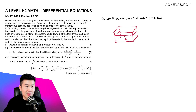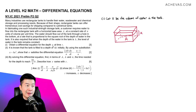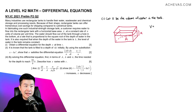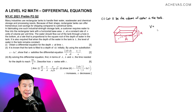The water in the tank has a depth of x. The depth of the water in the tank is x, which means that the volume of the water in the tank, which is V, is going to be the base area multiplied by its depth — so it's going to be A times x.